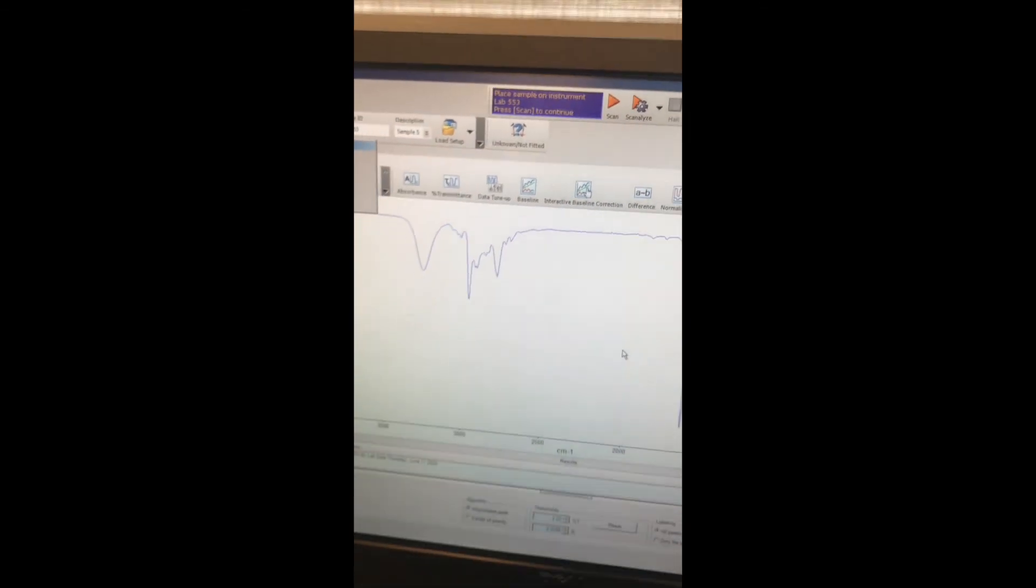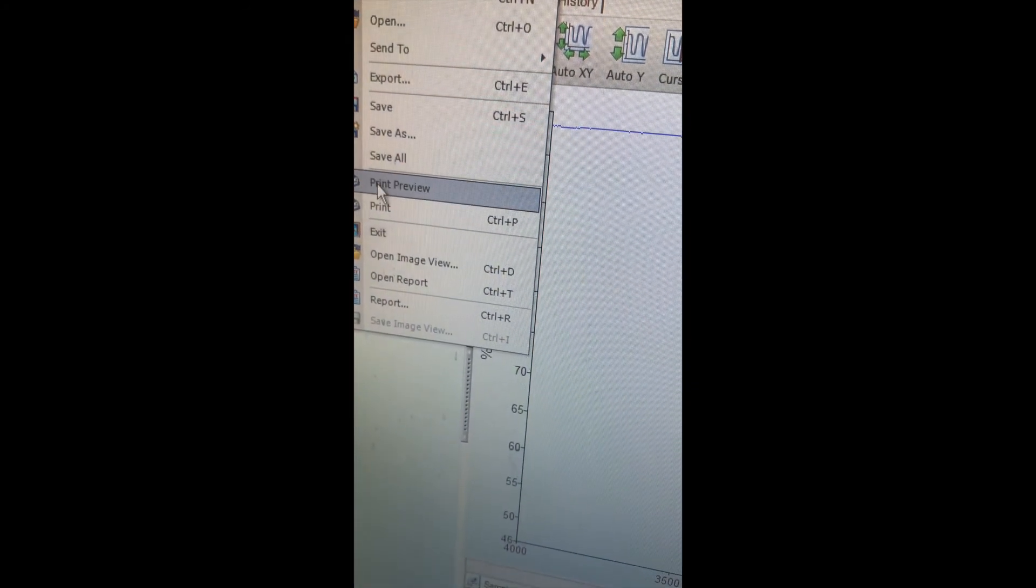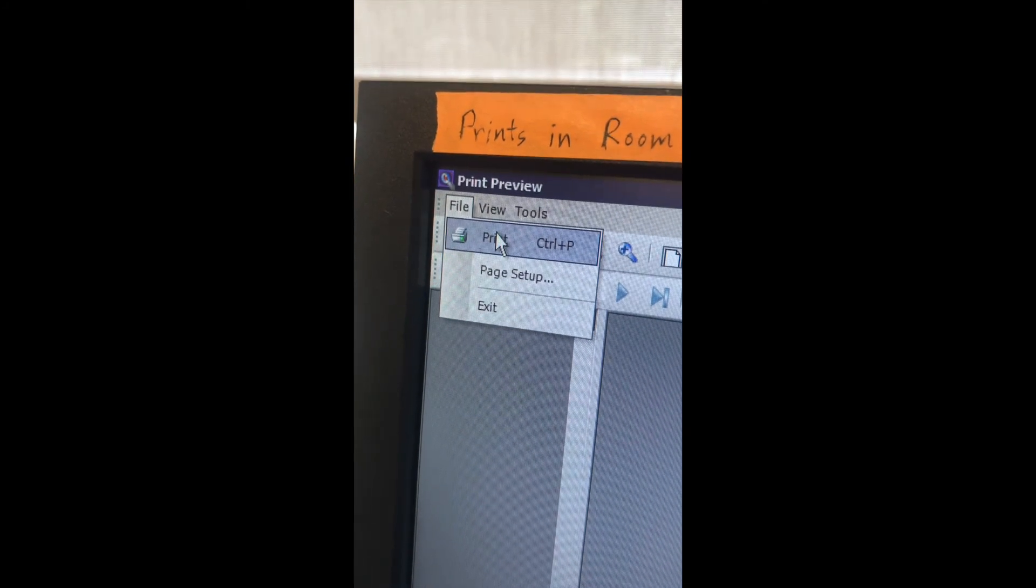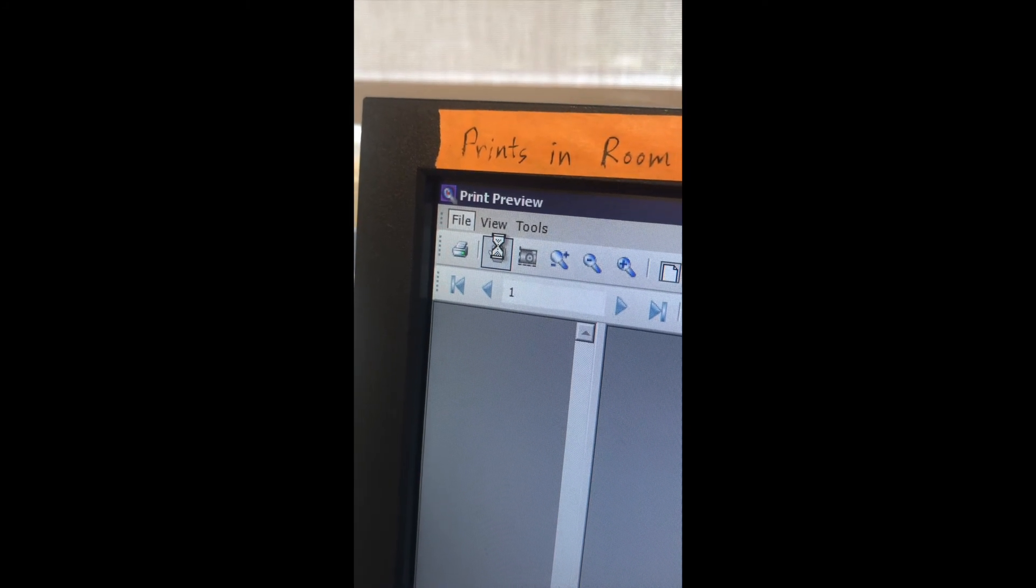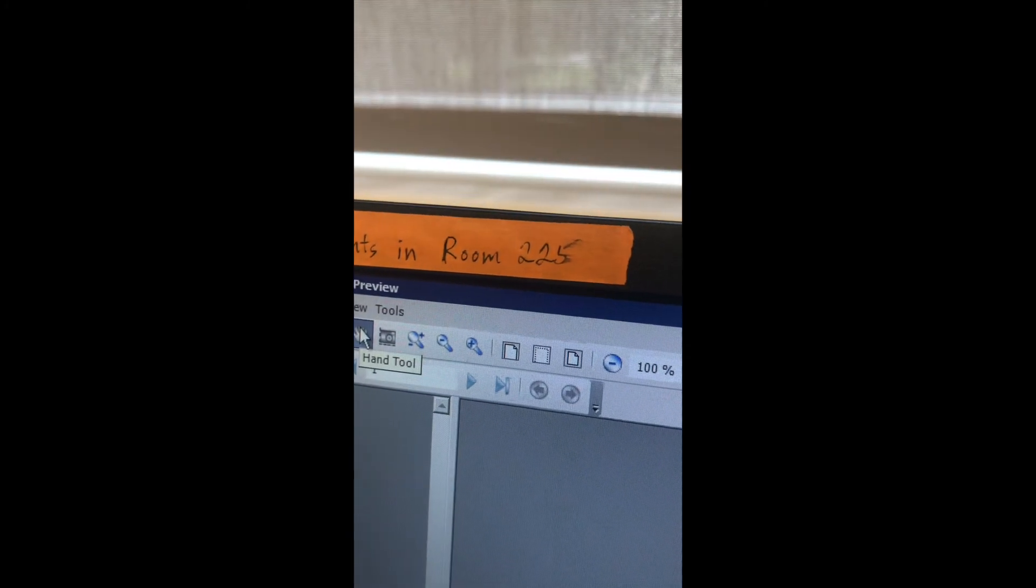Once our scan is complete, we'll have to print that. So you go to File, Print Preview, and a preview of your spectrum will show up on the screen. And once we verify that that is the one that we want to print, in fact, we can go over to File, and we'll do File, Print, and that'll be all set there. And then notice here, the piece of tape, it prints in room 225, so you've got to run across the hall and pick up your printer.